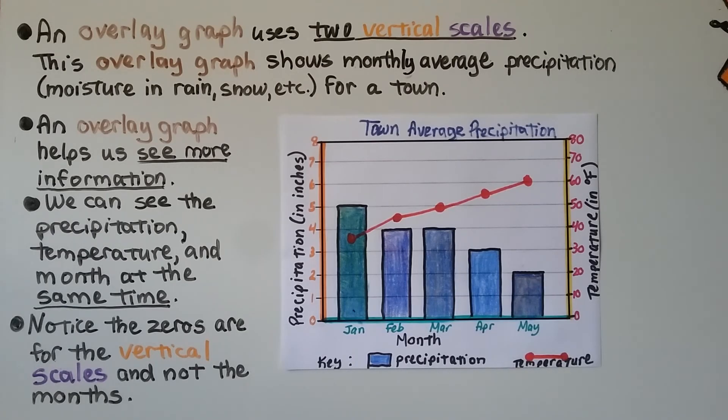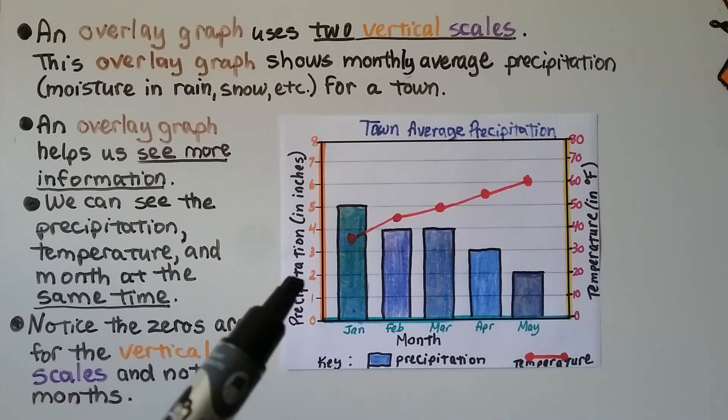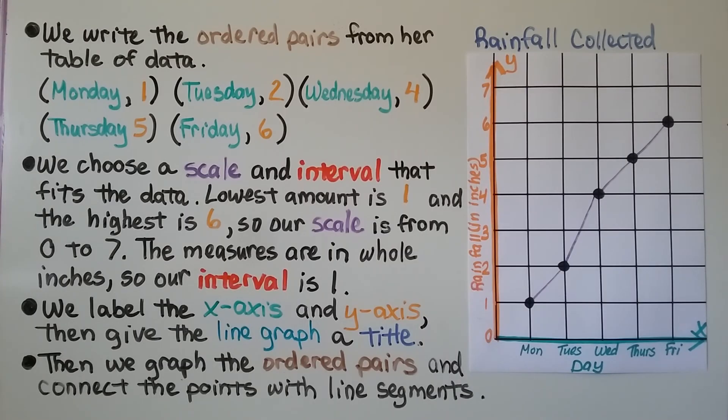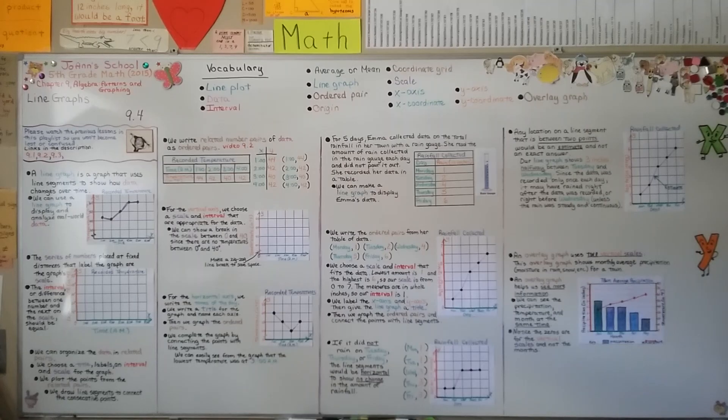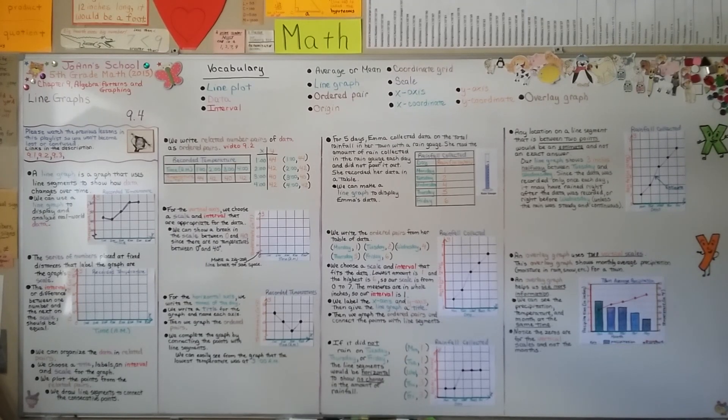And we learned in the last few videos that an ordered pair would be x values and y values. And do you notice for our data, we've got an x value of a month, like January, February, and March, and then our y value is a number. For this one, our ordered pairs were days of the week and a number. So our related pairs are going to depend on the data we have.